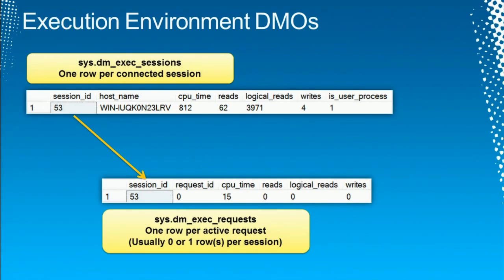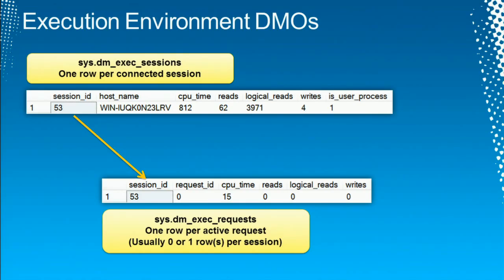The sessions DMV shows CPU time, reads, logical reads, writes, etc., cumulative to the lifetime of the session — all queries that have run. Whereas in the requests DMV, you see information about just the request currently running. This is a nice way to separate sessions doing a lot of activity with lots of short queries versus one query doing a ton of activity on its own. When baselining, you want to baseline both of these views — find out how much activity your sessions are doing in general, and how much activity your queries are doing. Over time, if you see spikes, sessions doing much more activity than expected, you can start digging in.